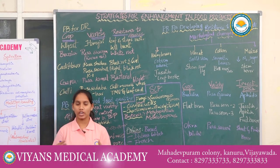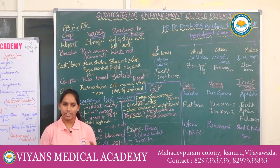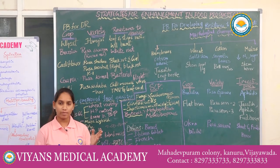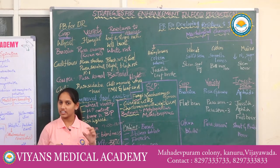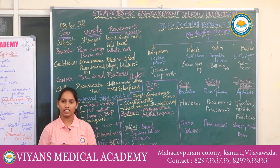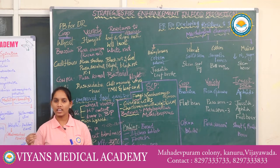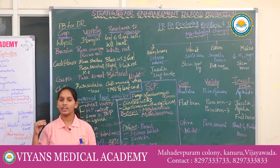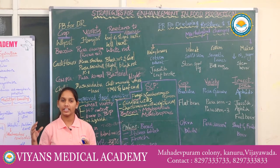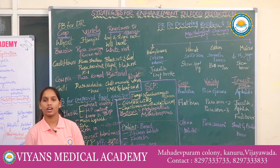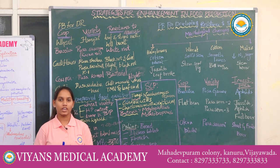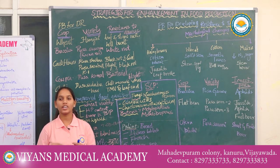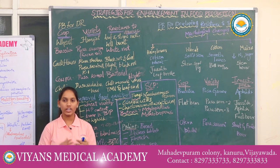Now coming to sugarcane. Sugarcane is of two types: Saccharum barberi and Saccharum officinarum. Saccharum barberi is grown in North India; it has a thin stem, thin content of sugar, and gives less yield. Saccharum officinarum has a high stem, high content of sugar, gives high yield, and is grown in South India but does not grow in North India. A new hybrid variety has been developed that is high in sugar content, high yielding, has a thick stem, and can also grow in North India.